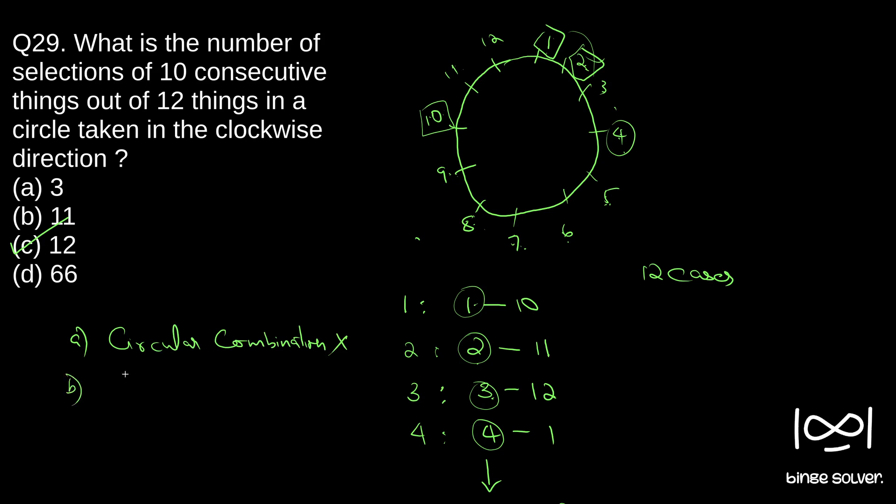Second, it is not a case of selection. We cannot apply combination here. Since we are restricted, so not combination. If you say 12C10, this will be wrong. It will not be 12C10. Since we cannot randomly pick 10 people, once we select the first person, there is only one choice that is to select all the 10 consecutive persons in a circular manner.